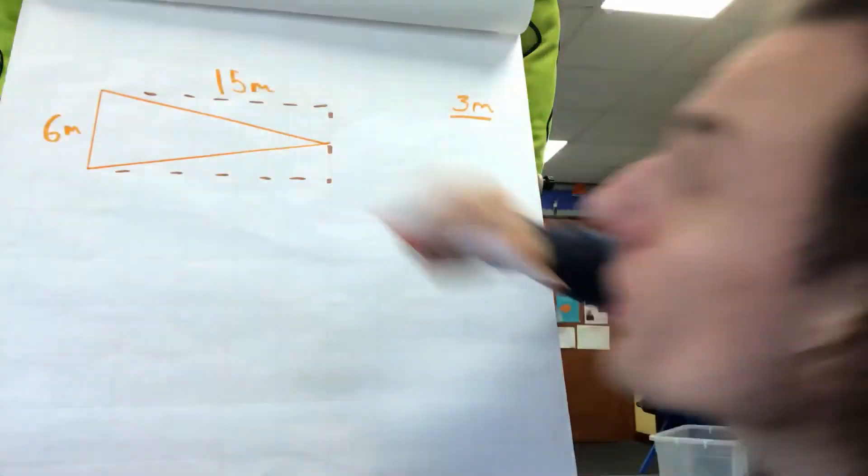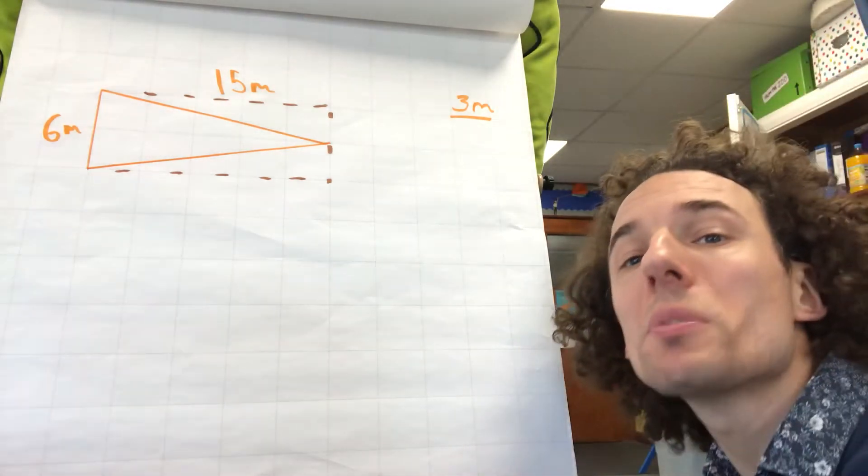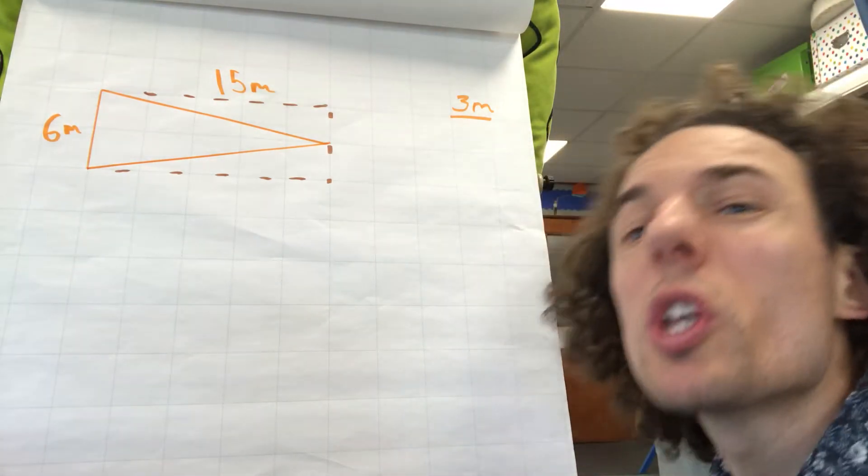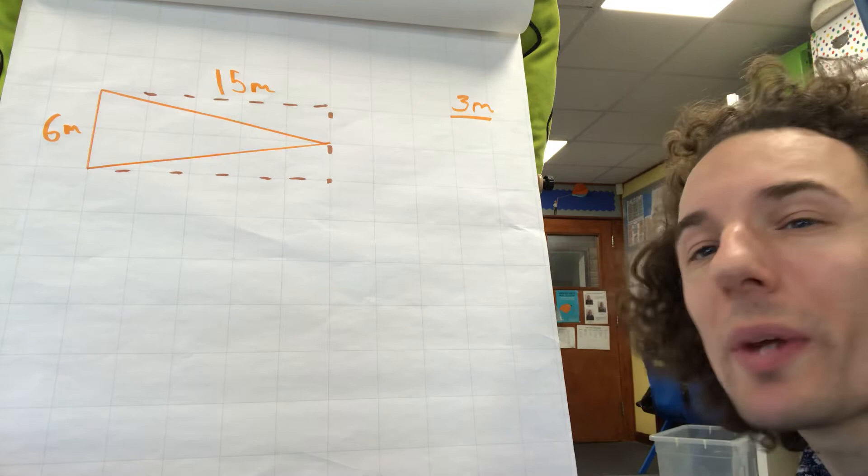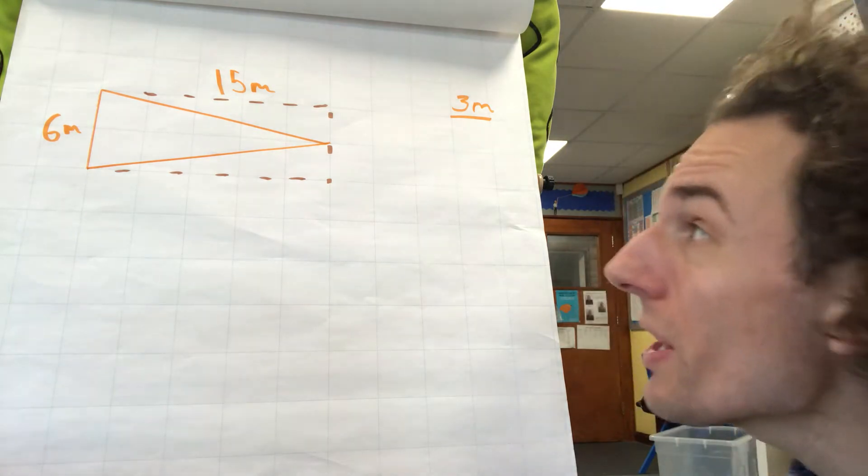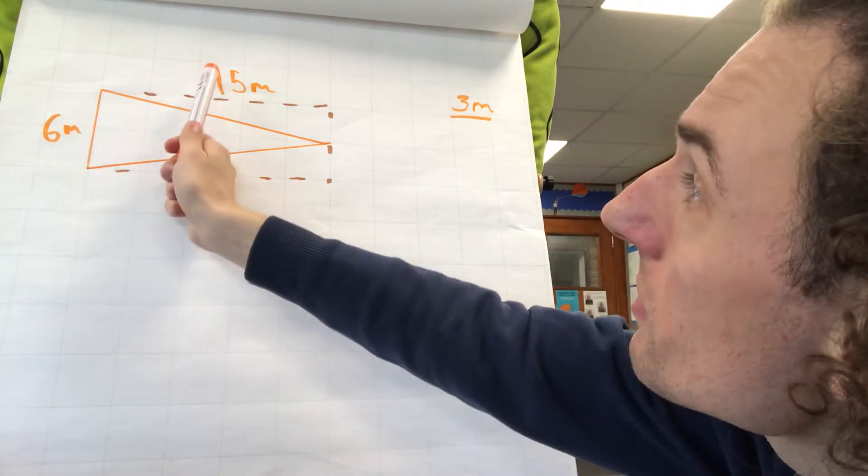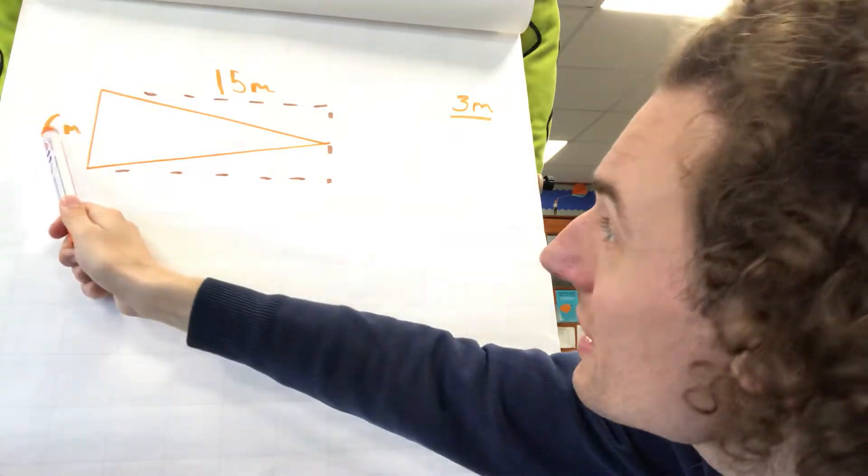So to find our rectangle, we need to do 6 times 15. Lots of you would jump straight for short multiplication. What we can do is our mental methods. We can do 6 times 10 and 6 times 5.